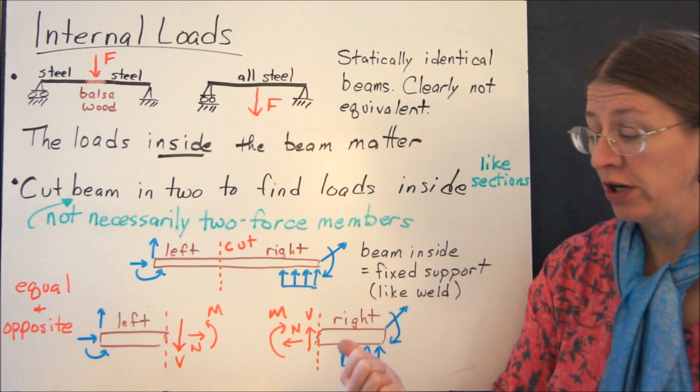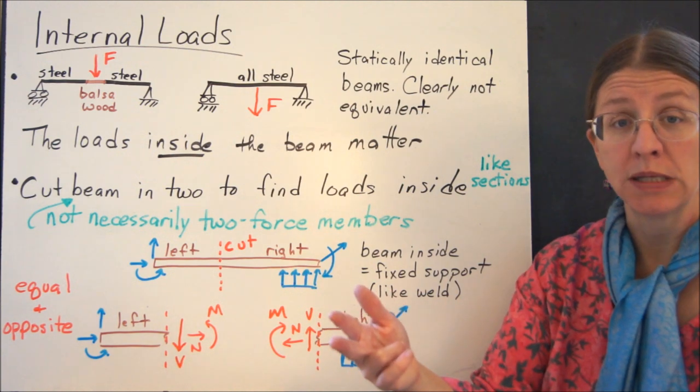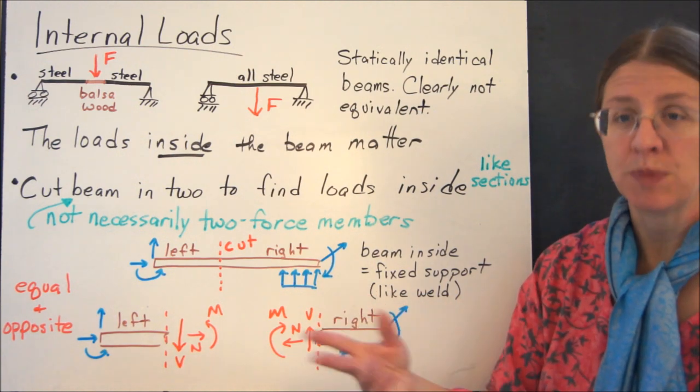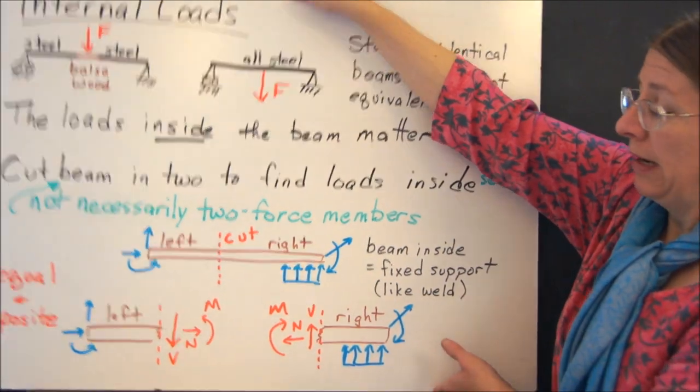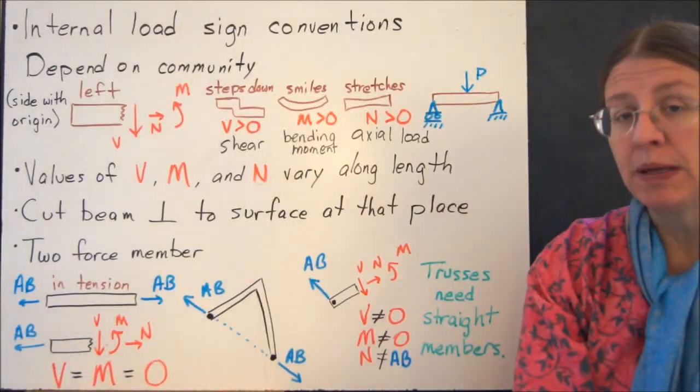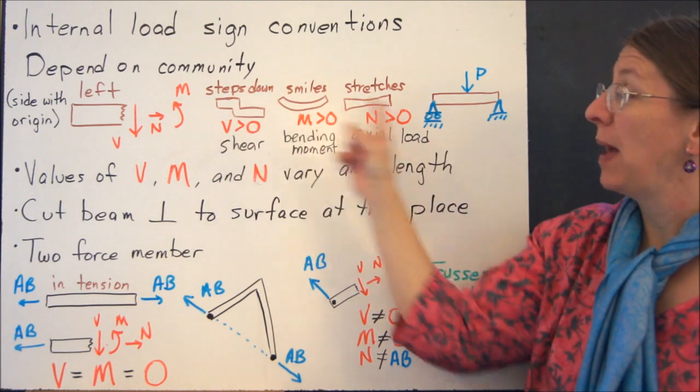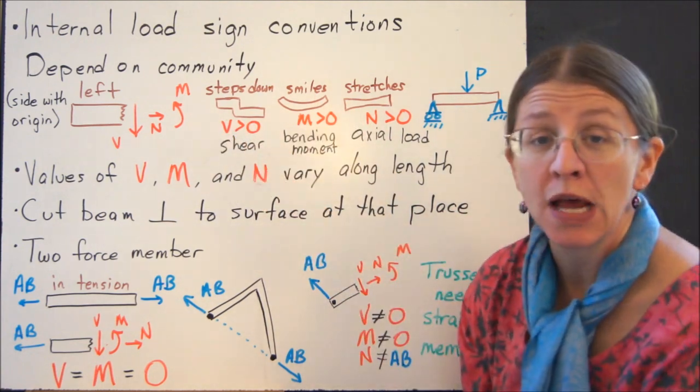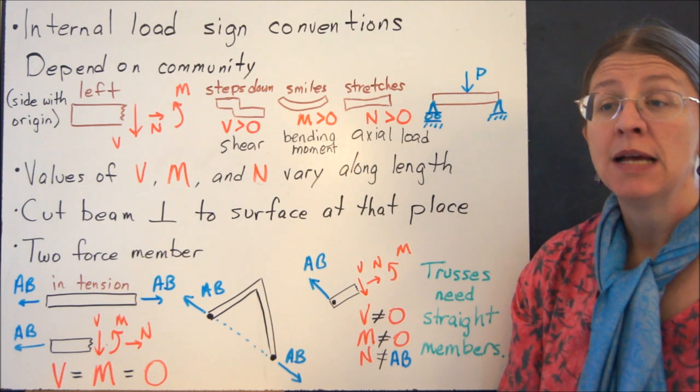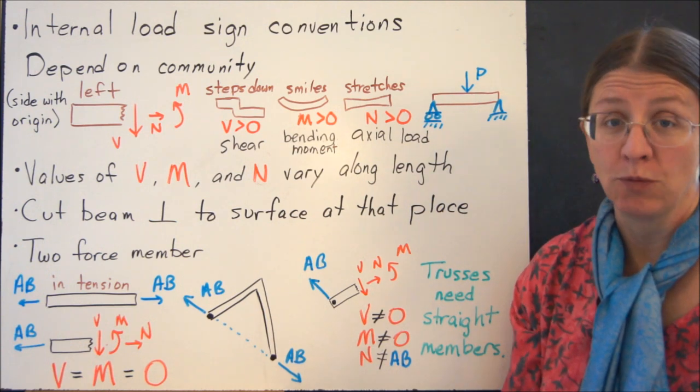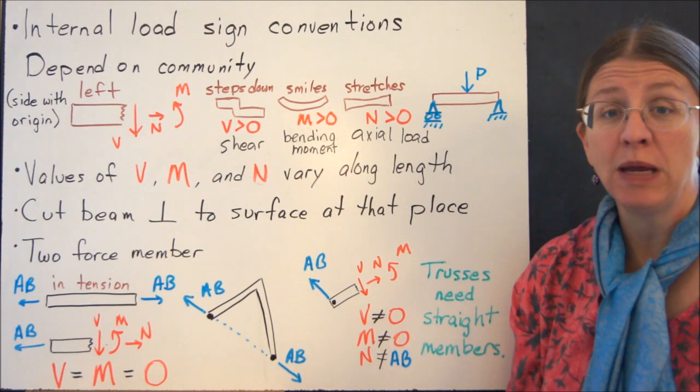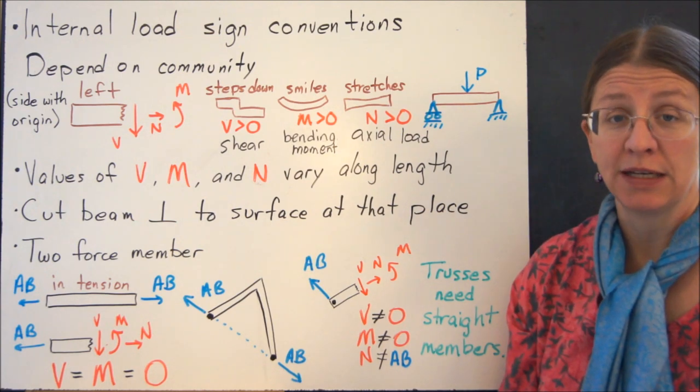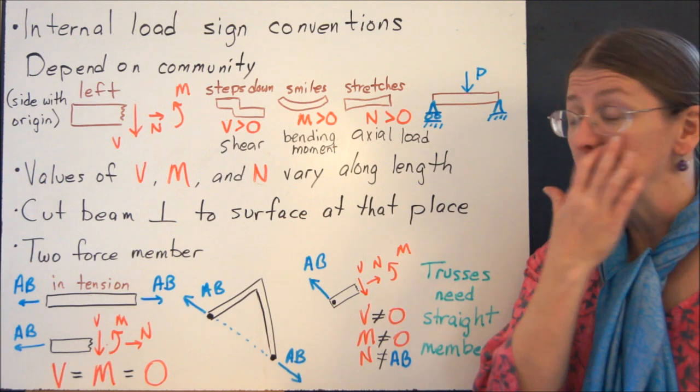We call these shear, axial load, and bending moment. And often, not always, but often, call them V, N, and M. Now, what side of the beam you take depends on what directions you're going to use. And we have certain sign conventions that we use for these so that we can communicate with each other. It does depend on your community if you're in a different set of people that might have a different set of sign conventions. These are the ones we're going to use.